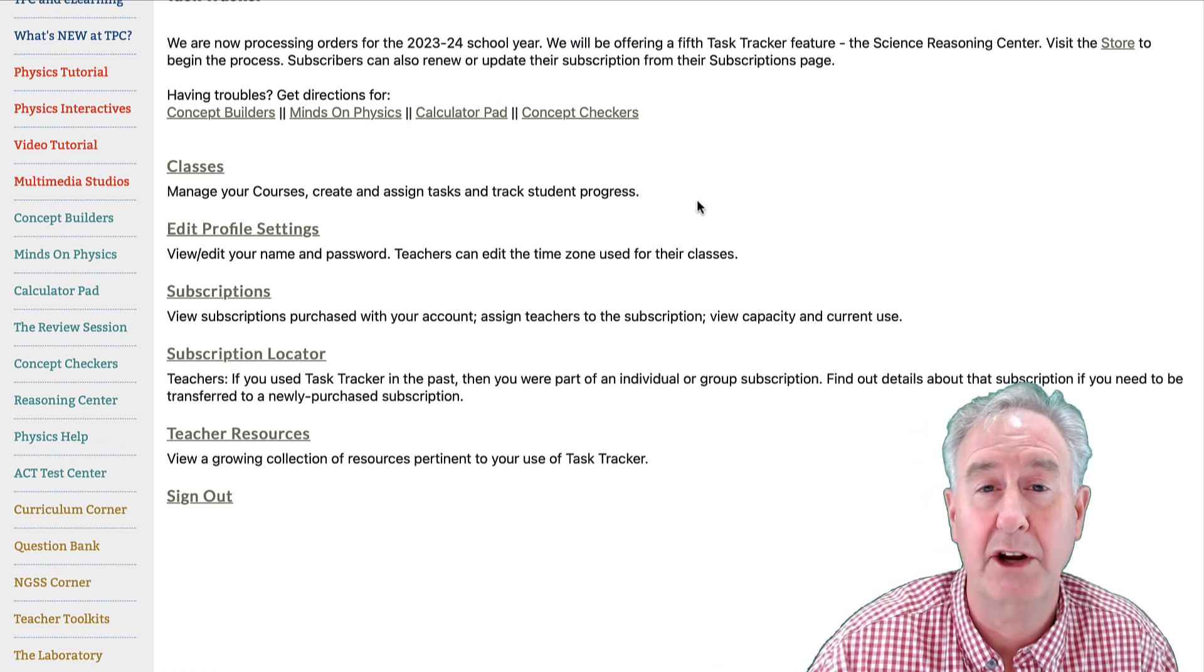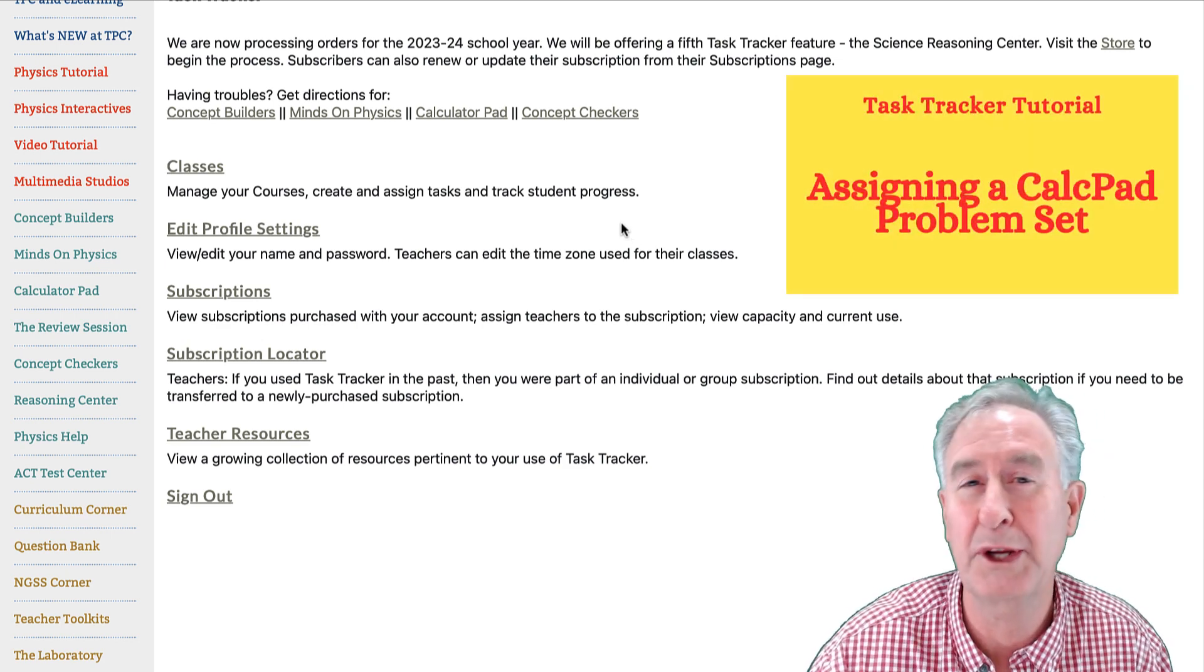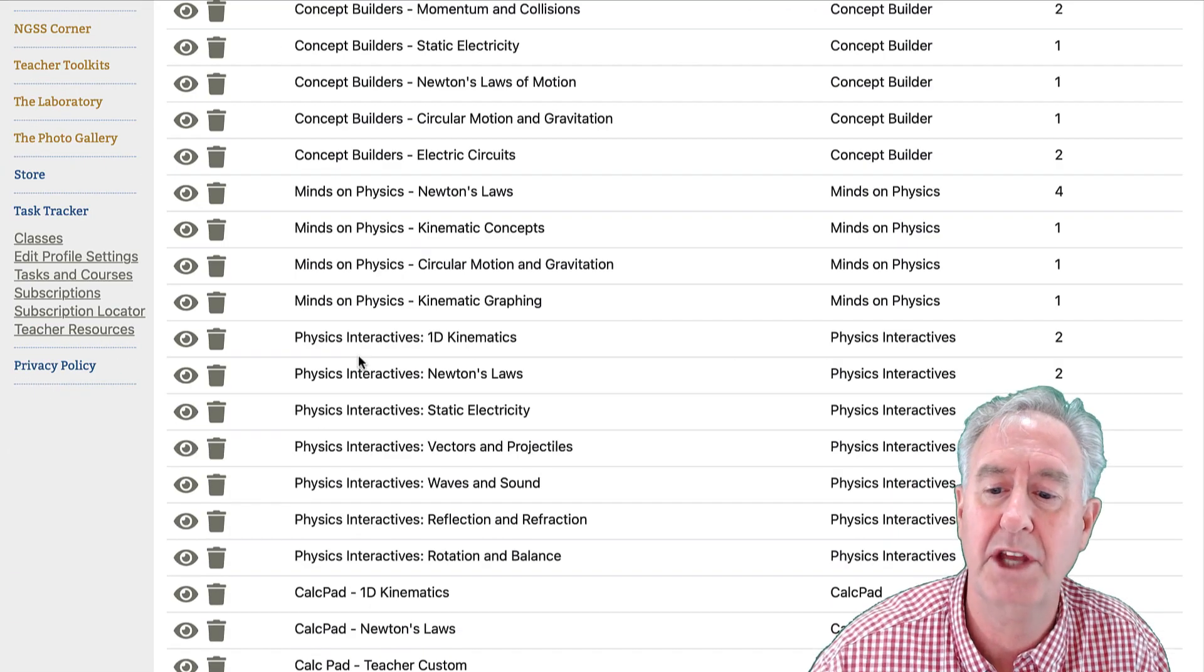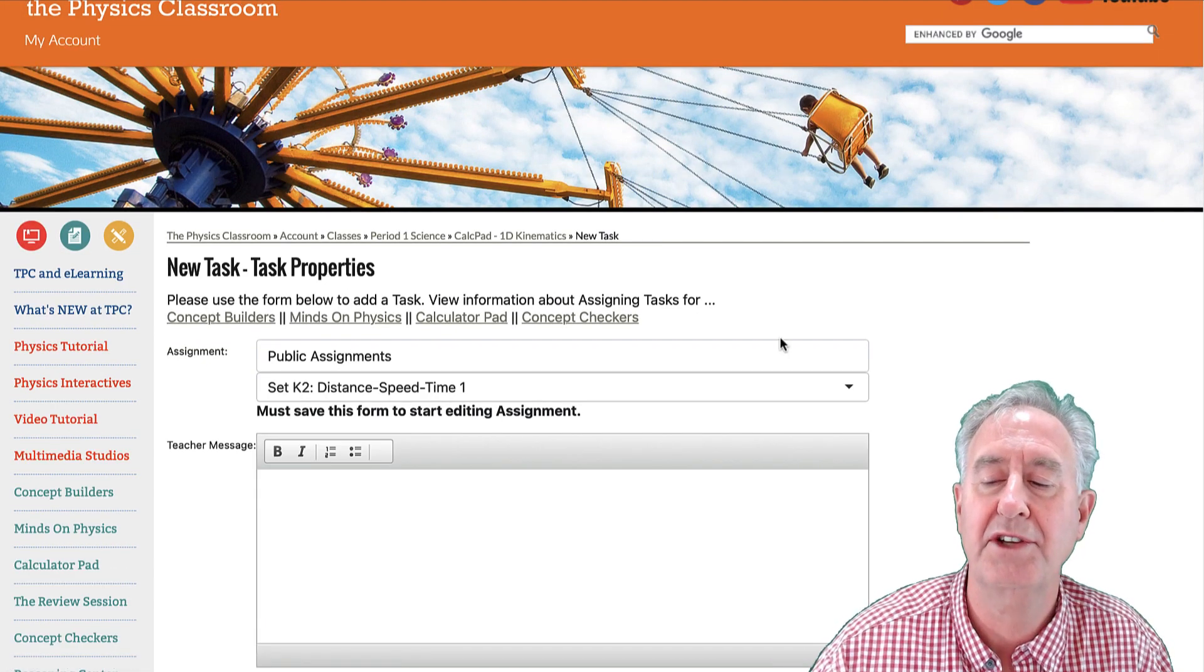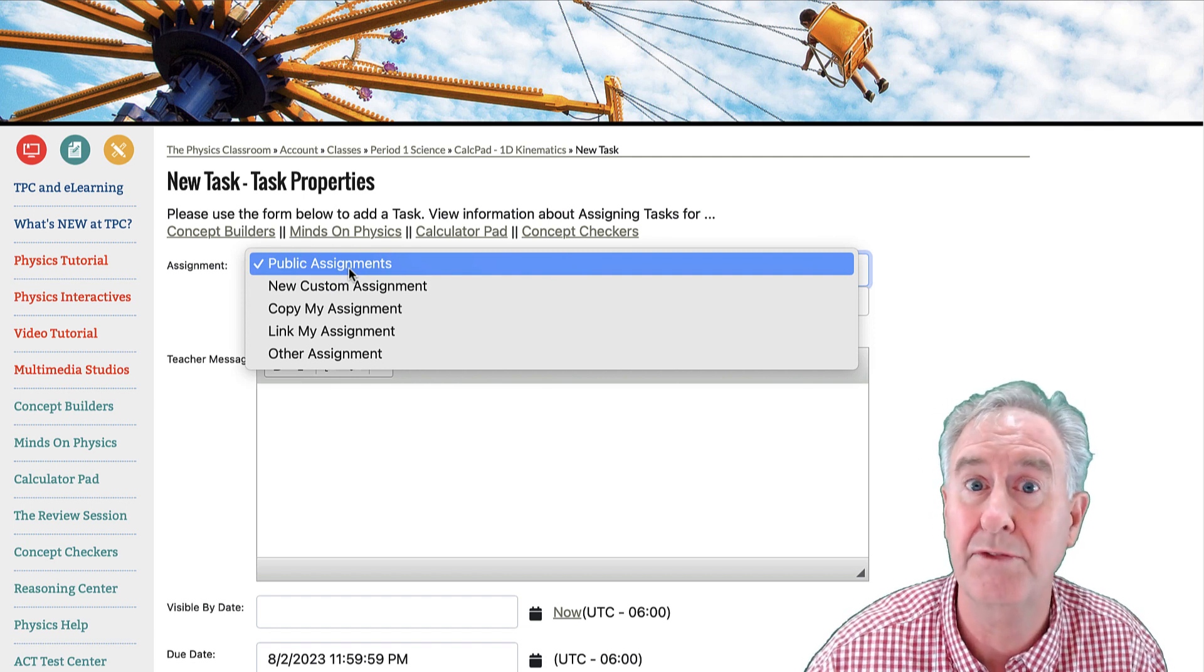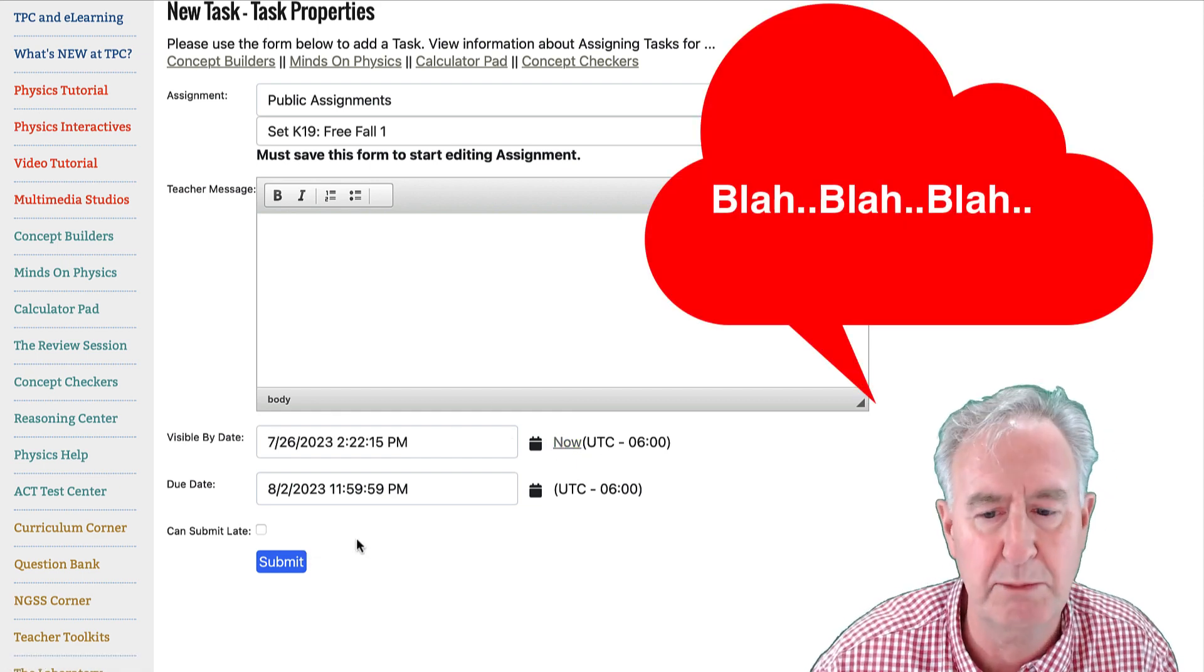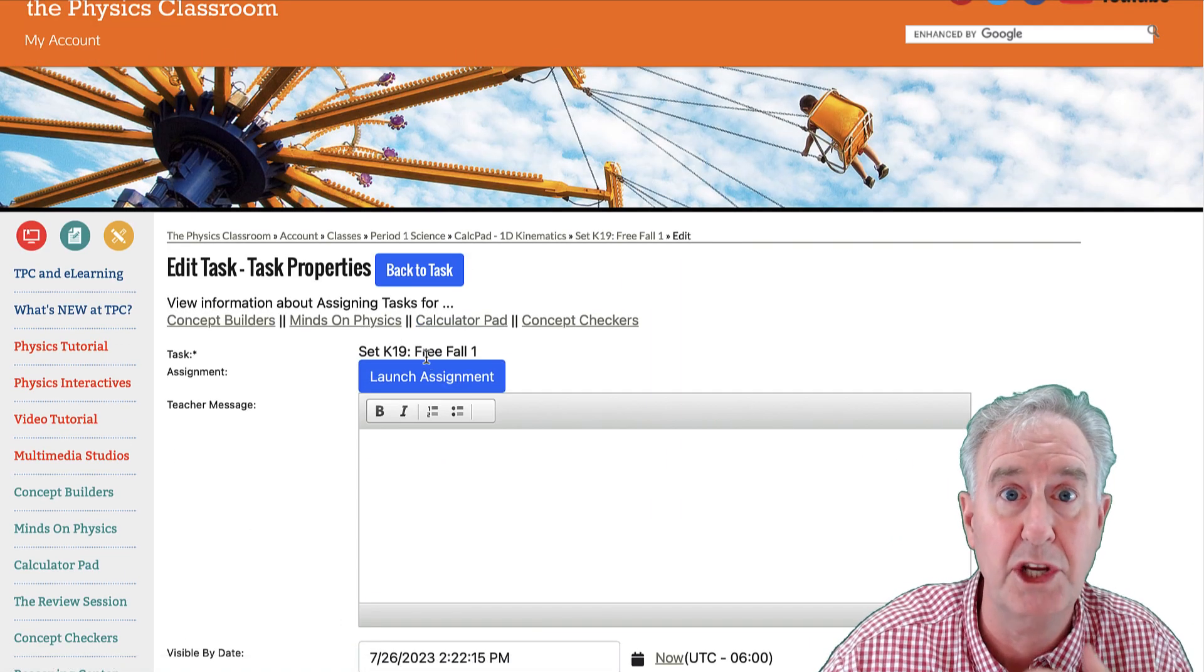So I'm now logged into Task Tracker and I'm back on my account page. I'm going to do the next several steps rather quickly because we have a little video on how to do this. It's the precursor video assigning a calc pad problem set. So I'm going to go to my classes, I'm going to go to period one science. I'm going to make a 1D kinematics calc pad problem set. So I'm going to open up that topic and then I'm going to create new task. When I create new task, I get a couple of drop-down menus. Public assignments here is what I want. What we mean by public assignments are assignments the physics classroom has created. So I'm going to go to problem set K19, free fall 1, and I'm going to fill out this form.